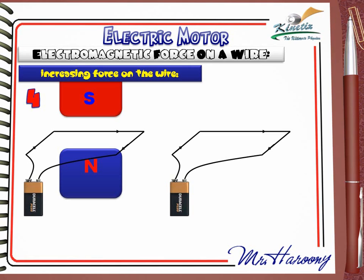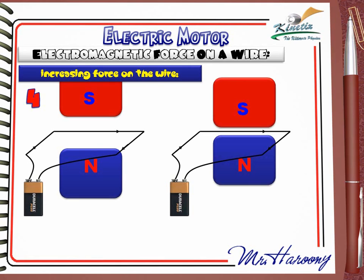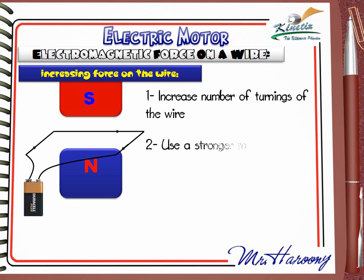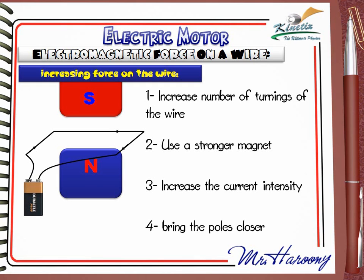Change 4, like change 1, does not require changing any apparatus: just bring the poles of the magnet closer to each other. This makes the magnetic field stronger, increasing the force. To summarize, we can increase the force on the wire by: (1) increasing the number of turnings of the wire, (2) using a stronger magnet, (3) increasing the current intensity, and (4) bringing the poles closer together.